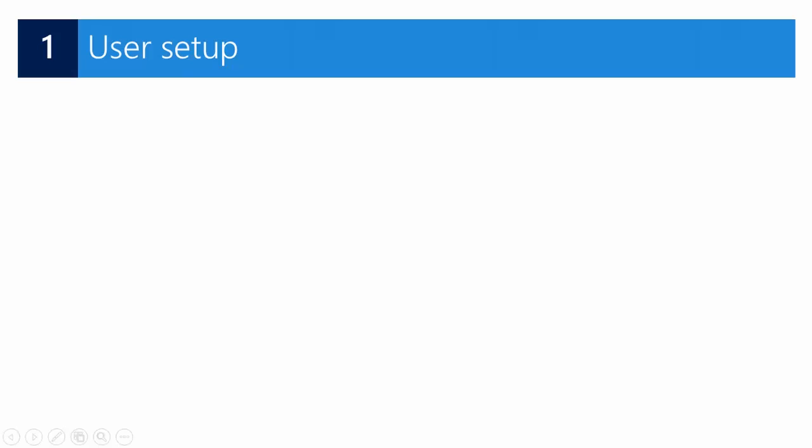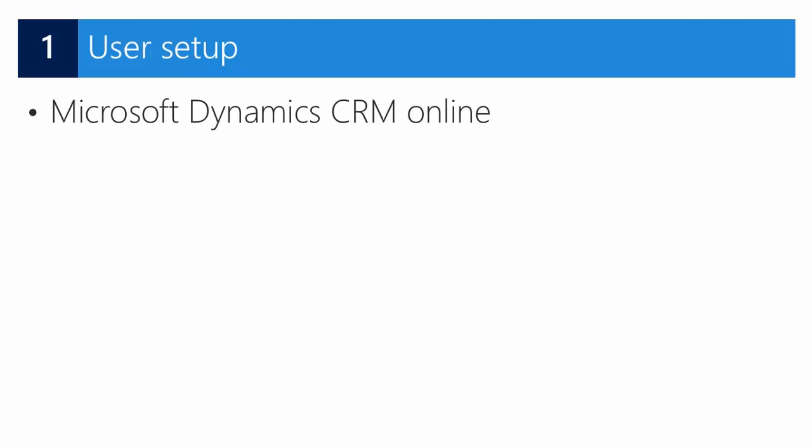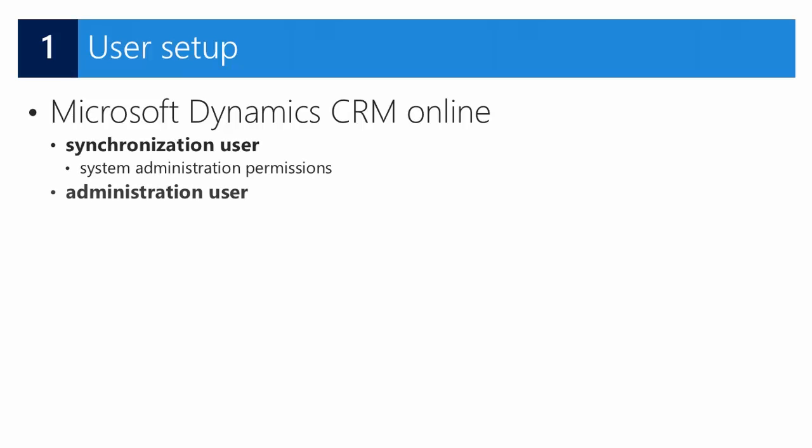As a first step we need to make sure that we have a Microsoft Dynamics CRM Online environment. You can easily set up a 30-day trial. The best practice is to set up two users in CRM Online: one user for syncing and another user for administration and import of the CRM solution. The administration user needs to have both system administration permissions and solution customizer permissions.